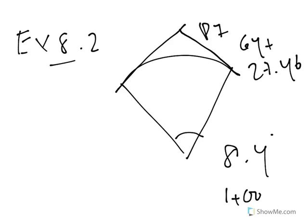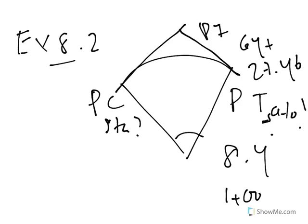2-degree curve. BC station, PT station, PCS station — Point of Tangency, Point of Curve. Covey Chaga 2-degree curve, degree curve, Covey Chaga.